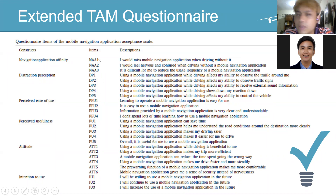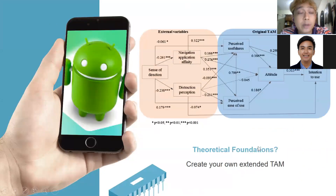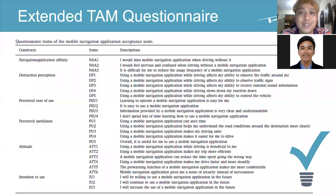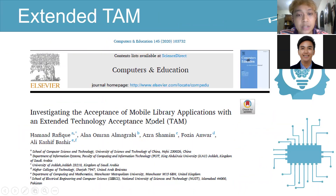Looking at another example — technology acceptance model of mobile library applications — you can see perceived usefulness and perceived ease of use as latent variables from the extended TAM. They modify the original TAM to fit their context. For example, 'Using the Insignia ILS would enable me to access the library more quickly' rated one to five.